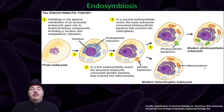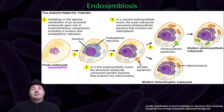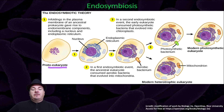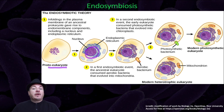Far back in evolutionary history, there was a pre-eukaryotic cell. That pre-eukaryotic cell started to have its plasma membrane fold inwards, or invaginate. You can see prokaryotic cells do that all the time. At some point, this invagination started to encompass the nucleus, and over time became the nuclear envelope to create the organelle of the nucleus.